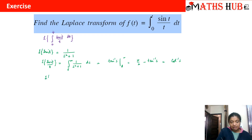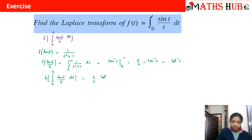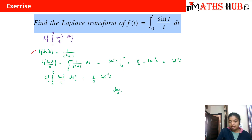Then we need to apply the Laplace of the integral from 0 to t of (sin t / t) dt. When we have an integral on the left hand side, the answer gets divided by s. So the answer becomes cot⁻¹(s) divided by s, giving (1/s)·cot⁻¹(s) as the final answer. To recap: we started from sin t, took the Laplace to get 1/(s²+1), divided by t to get cot⁻¹(s), and finally took the integral from 0 to t to get (1/s)·cot⁻¹(s).